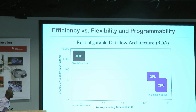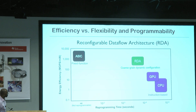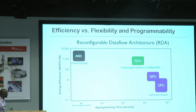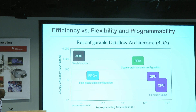CPUs and GPUs are instruction-based; you can change the instructions every cycle. However, you get much less energy efficiency: 1 to 10 mega ops per milliwatt. Reconfigurable dataflow architectures like Plasticine with coarse-grained dynamic configuration can get you dramatically better improvements in energy efficiency, and they're much more flexible and reprogrammable than a fine-grained, statically configured architecture like the FPGA.